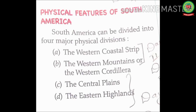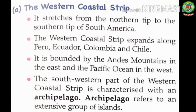Now students, the next topic is physical features of South America. Physical features means natural features on the earth's surface. South America can be divided into four major physical divisions: number one, the western coastal strip; number two, the western mountains or the western Cordillera; number three, the central plains; number four, the eastern highlands. Today we will discuss the first physical feature — the western coastal strip. Open page number 95 of your book.